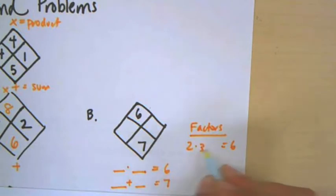So I have like two times three, and I could check, two times three is six, but two plus three is not seven. So that's not it. Oh yeah, and then there's also six times one. So don't forget this one, because this is a common one people forget about.